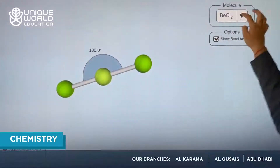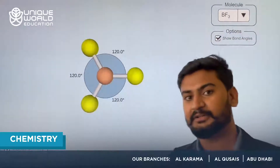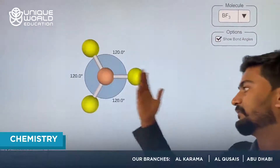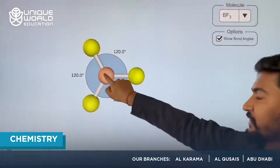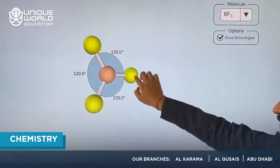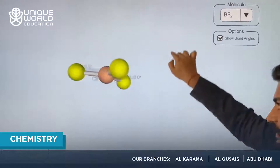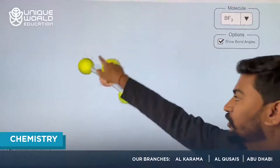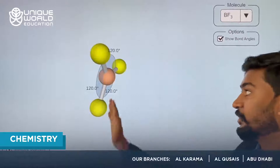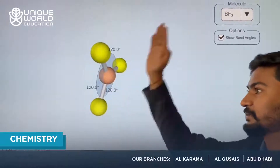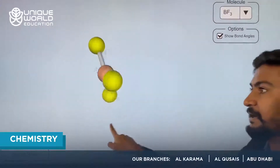Moving on to the next one, we have AB3 type geometry. One example of this would be BF3. In this molecule, the bond angles are 120 degrees, and if you rotate it, it looks like someone has drawn three atoms on a plane or on a piece of paper. Therefore it gets a shape called trigonal planar.